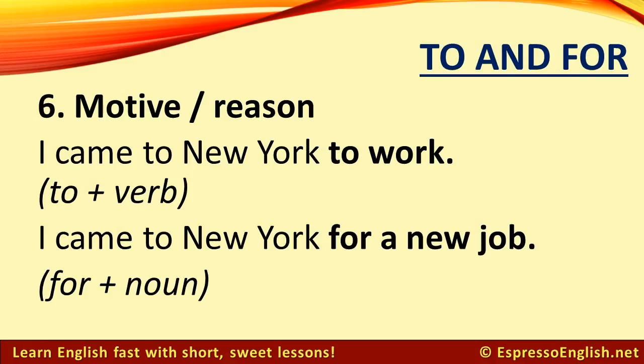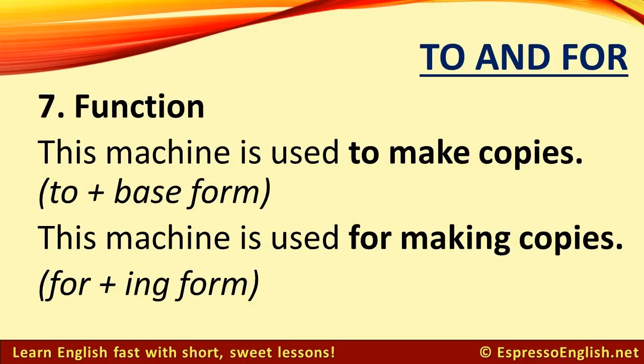Let's take a closer look at examples 6 and 7. When talking about a motive or reason, use 'to' plus a verb, and 'for' plus a noun. For example, 'I came to New York to work' versus 'I came to New York for a new job.' When talking about function, we can use 'to' or 'for,' but 'to' is followed by the base form and 'for' is followed by the '-ing' form. For example, 'This machine is used to make copies' and 'This machine is used for making copies.'